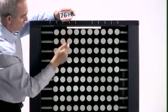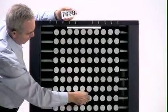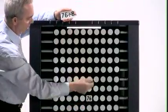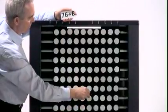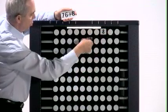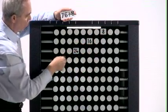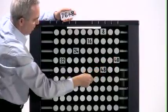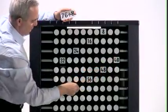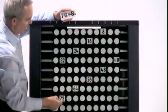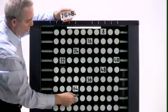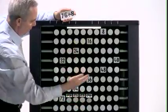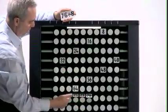76 divide by 8. 76 lives here. Divide by 8. 1, 2, 3, 4, 5, 6, 7, 8, 9. Remainder 1, 2, 3, 4. 9, remainder 4.